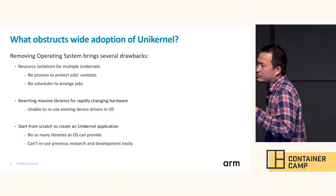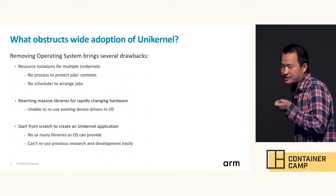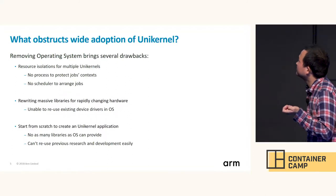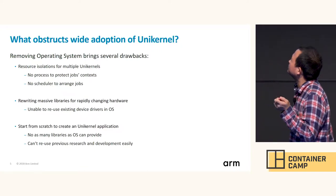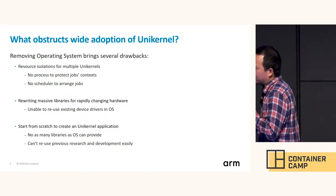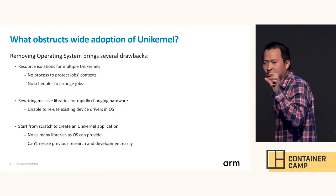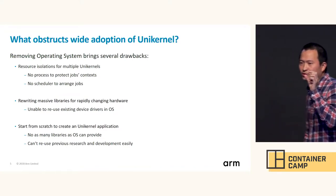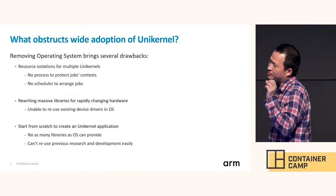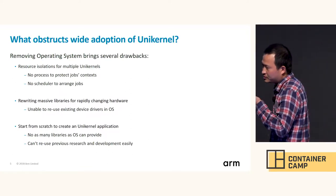After removing the generic OS, it brings several drawbacks. The first is resource isolation for multiple UniKernels. Without a generic OS, we don't have a process manager to protect job contexts, and we don't have a scheduler to arrange our jobs.